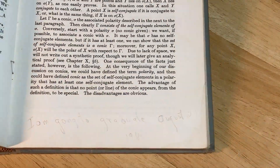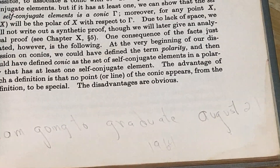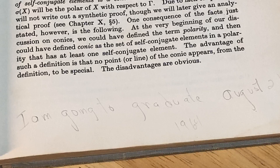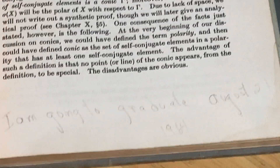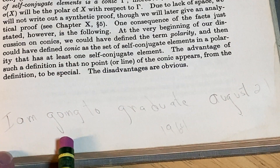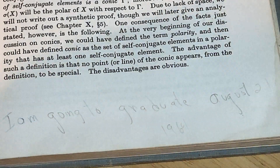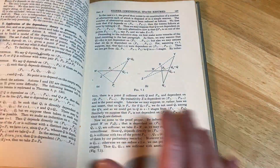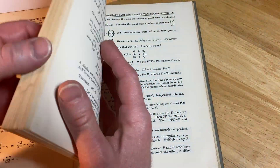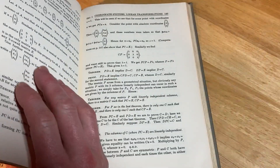Oh, what's this? Look, someone wrote something here — this is cool. It says, I am going to graduate August 21, 1964. Do you see that? That is so cool. I wonder who wrote that — that's interesting. So this was probably being used for a course, maybe not just for self-study. You can see the pages are worn, it's just been used, it's withstood the test of time.